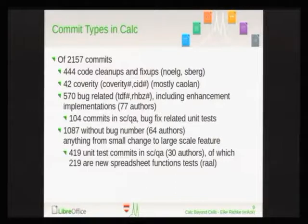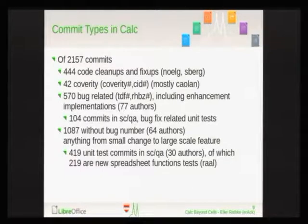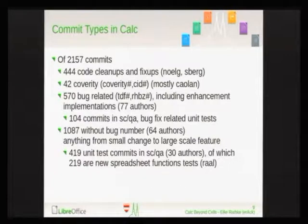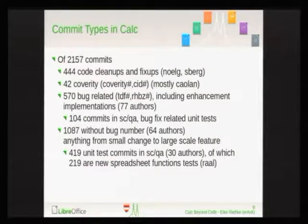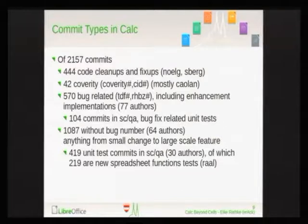Of the commits without bug numbers, 419 are in the unit tests directory — quite a high number, with 30 authors involved. Of those 419, some 219 are the new spreadsheet function tests that Raal does — one flat ODS document per function that tests it in various aspects with different parameters. That still leaves 200 unit test commits added to improve quality without any bug number.